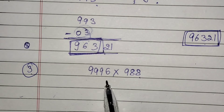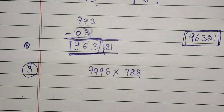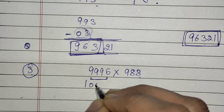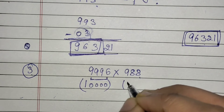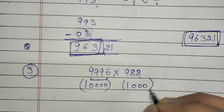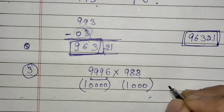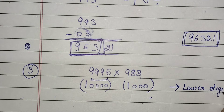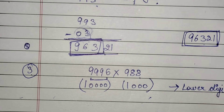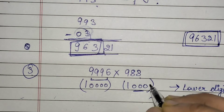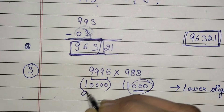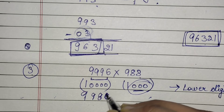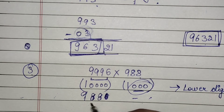The third example is 9996 into 988. This value 9996 is near to 10000, and 988 is near to 1000. First find the lower base value — how many zero digits are in the lower base? There are 3 zero digits. Now write down: 988 is how much lesser than 1000? It is lesser by 012.